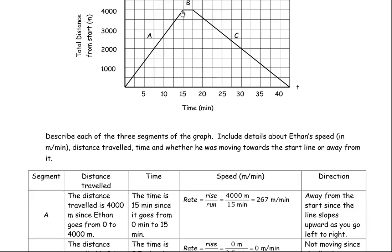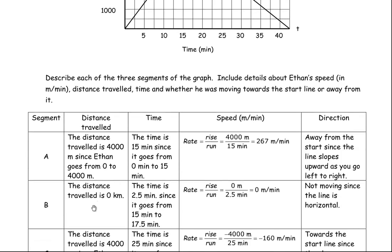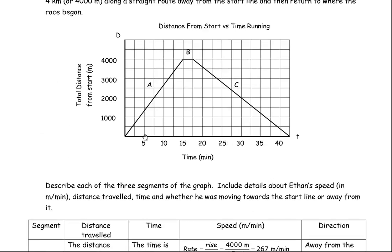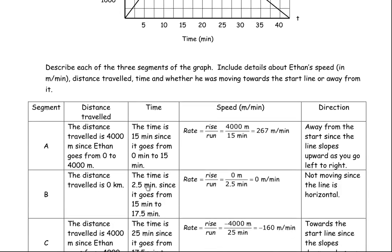Now for line segment B, so he ran the 4,000 meters away from the start line, and he stopped, and he stopped all along here, because his distance is staying at 4,000 meters. He's 4,000 meters from the start line here, here, here, here, all the way to there, and then he starts to run back. So the distance traveled for B is 0, because he's staying 4,000 meters away from the start line. The time is 2 1⁄2 minutes. Remember I said that every block is 2 1⁄2 minutes, and it's one full block long. So the time is 2 1⁄2 minutes.